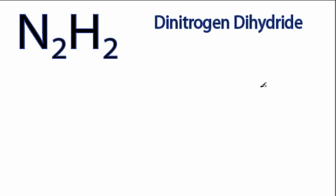This is the N2H2 Lewis structure. Nitrogen is in group 5, or 15, on the periodic table, 5 valence electrons, but we have 2 of them.